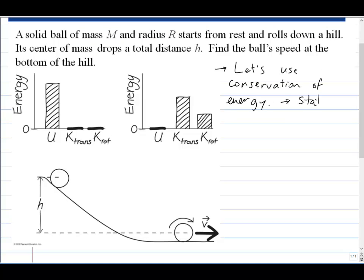So let's use conservation of energy to do this. The reason we can do that is because static friction involved in rolling does no work, similar to normal force. Also we're neglecting air resistance and there's no engine or something attached to this ball as it rolls. So initial energy will be equal to final energy.